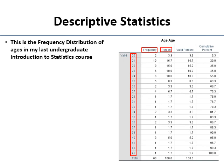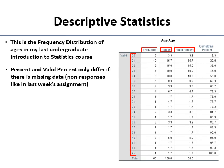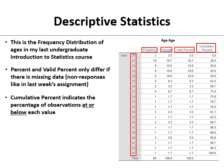Percent is exactly what it sounds like — it's the percent of folks who were each age. Valid percent in this case is exactly the same because everyone provided a valid age. They would differ if someone forgot to give their age or gave a joke age. Finally, the cumulative percent is the percent who had a value at that level or lower — it's the percent of observations at or below a particular value.